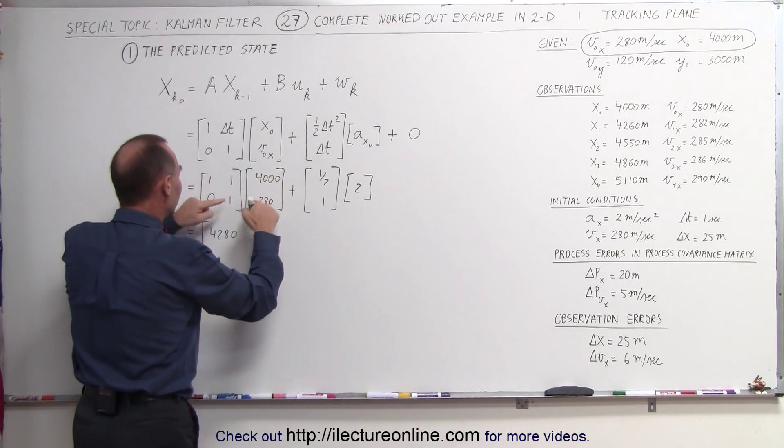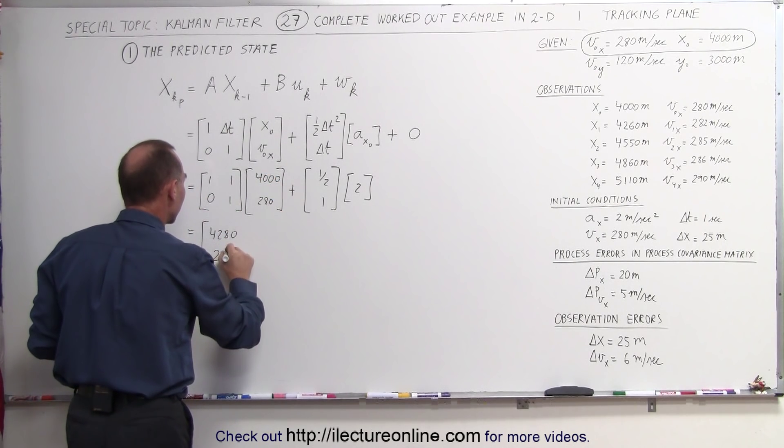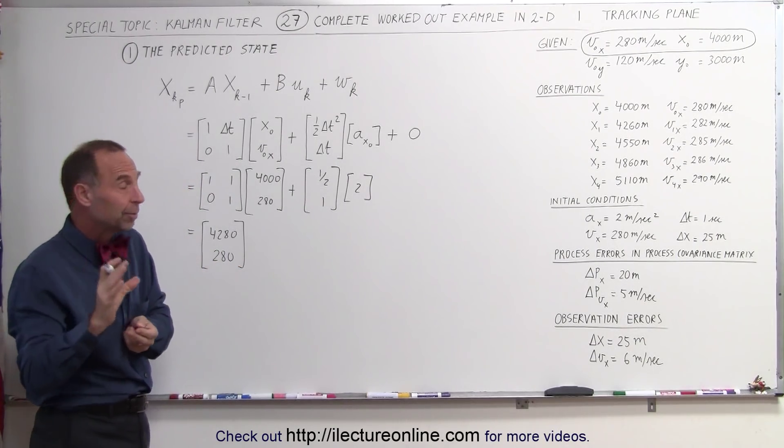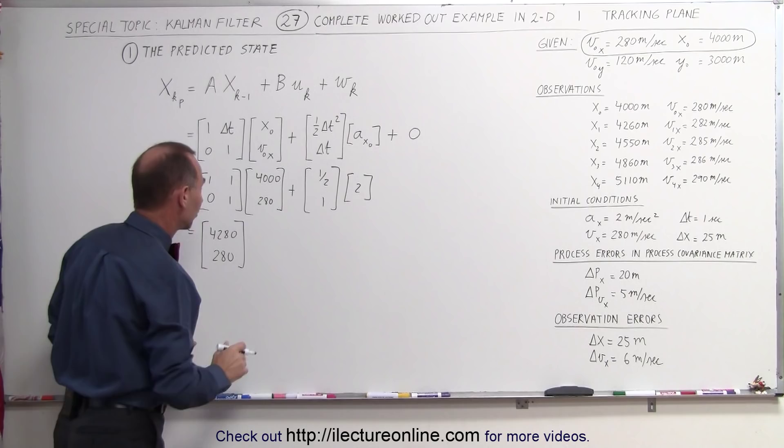Then multiply this times that, and of course velocity is going to be 280 meters per second. However, that will still be adjusted by the acceleration that we're experiencing.